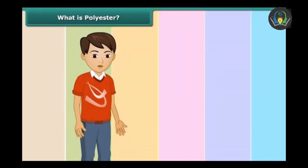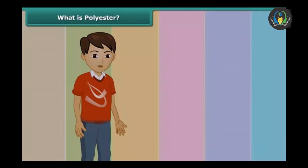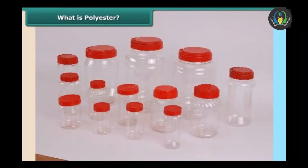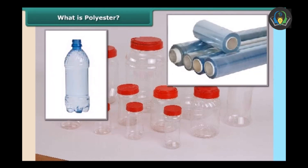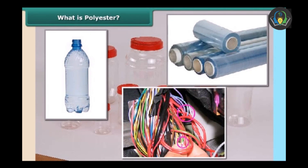It is widely used in the textile industries to make sarees. Have you heard about PET bottles? These PET bottles are used to store things like sugar, salt, etc. Polyester is also widely used to make wires and bottles.